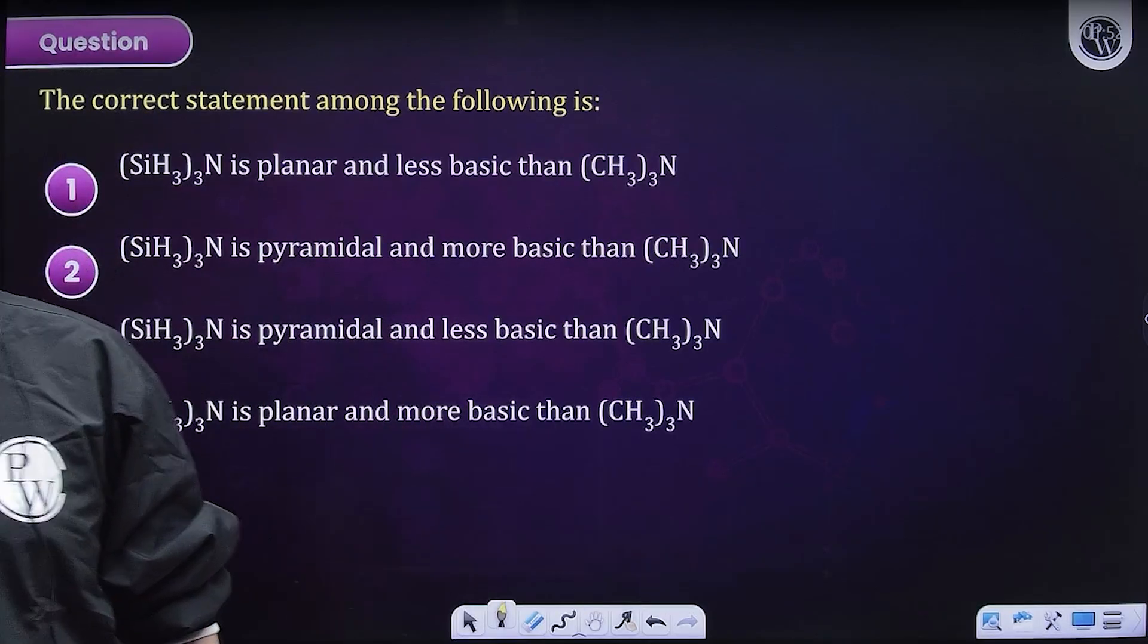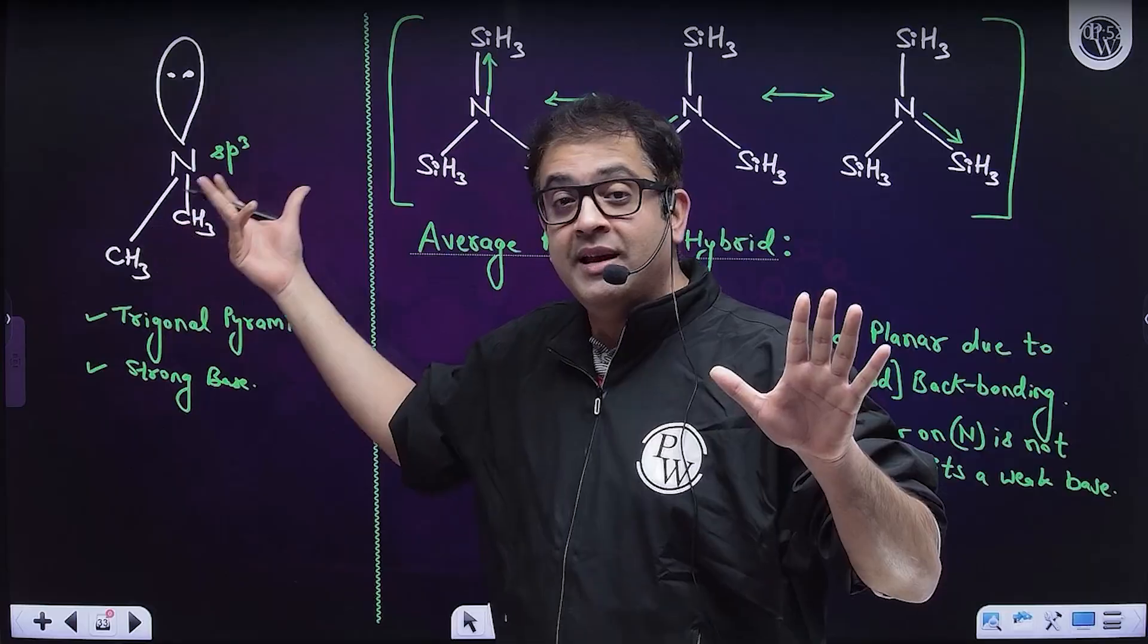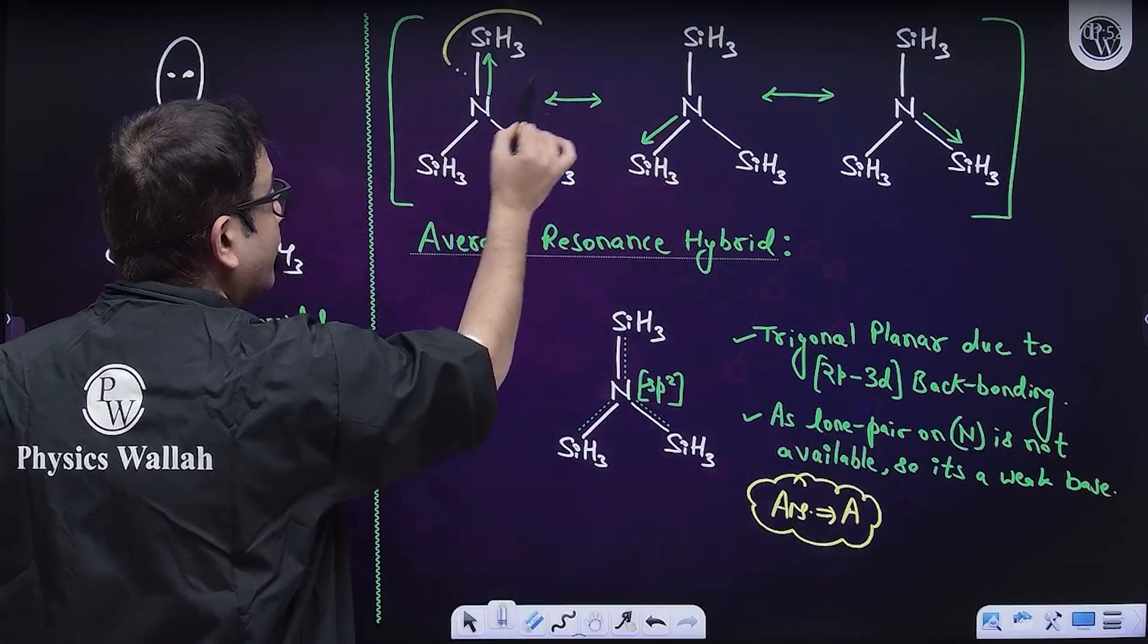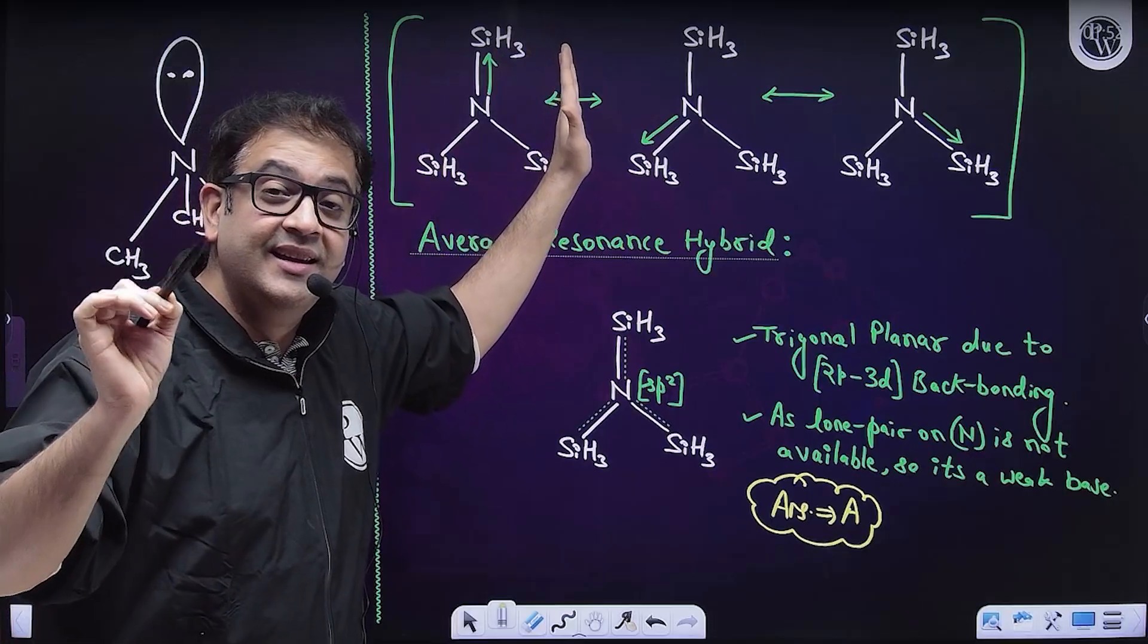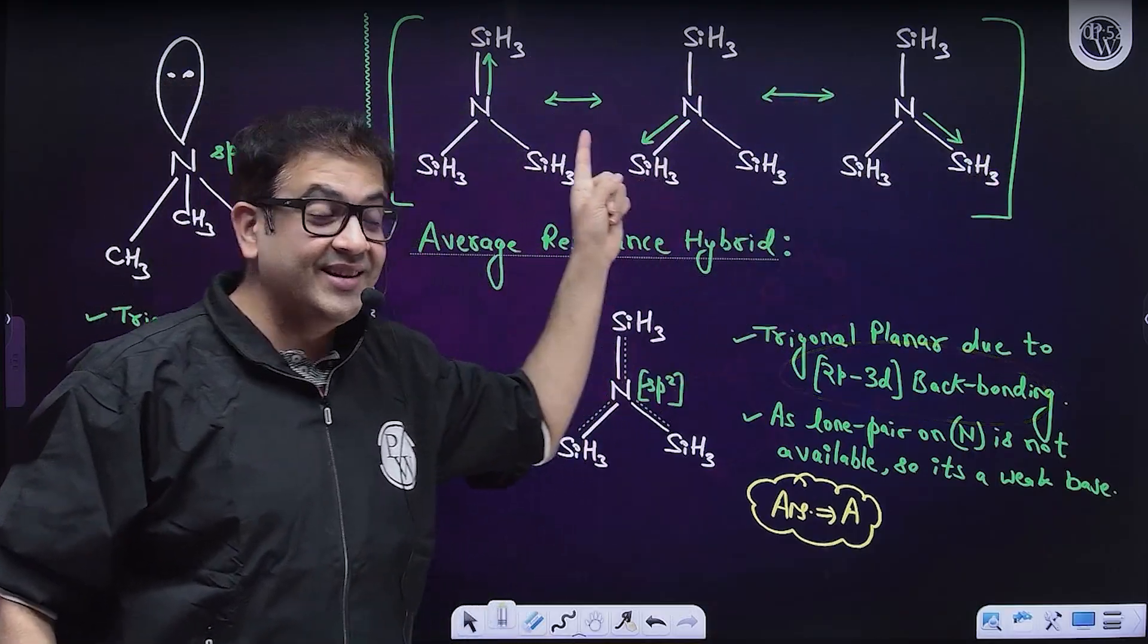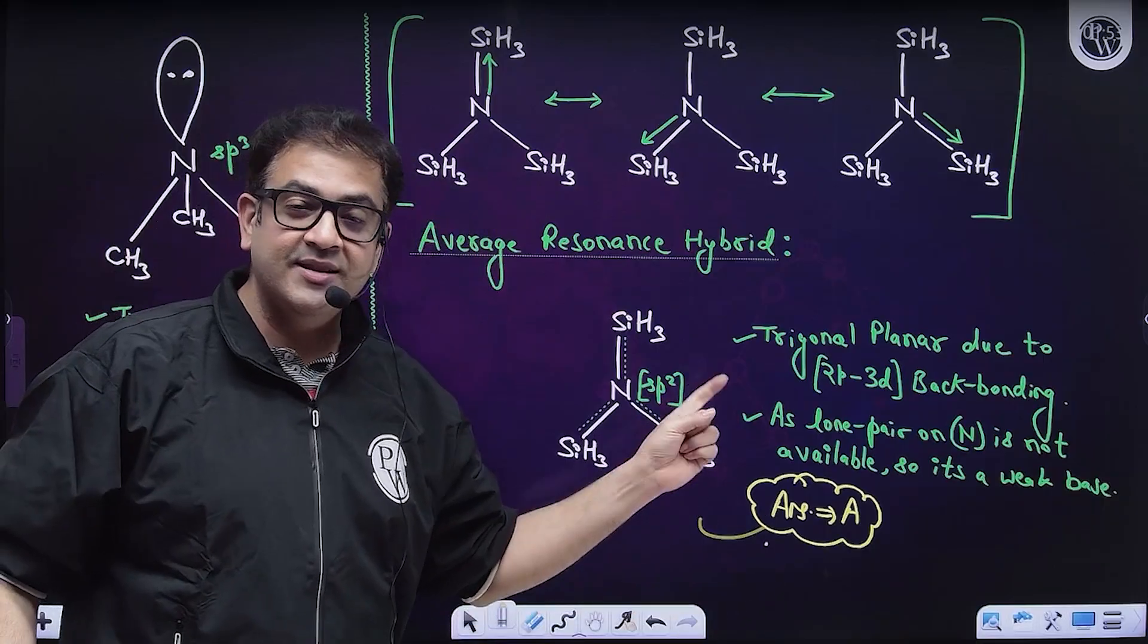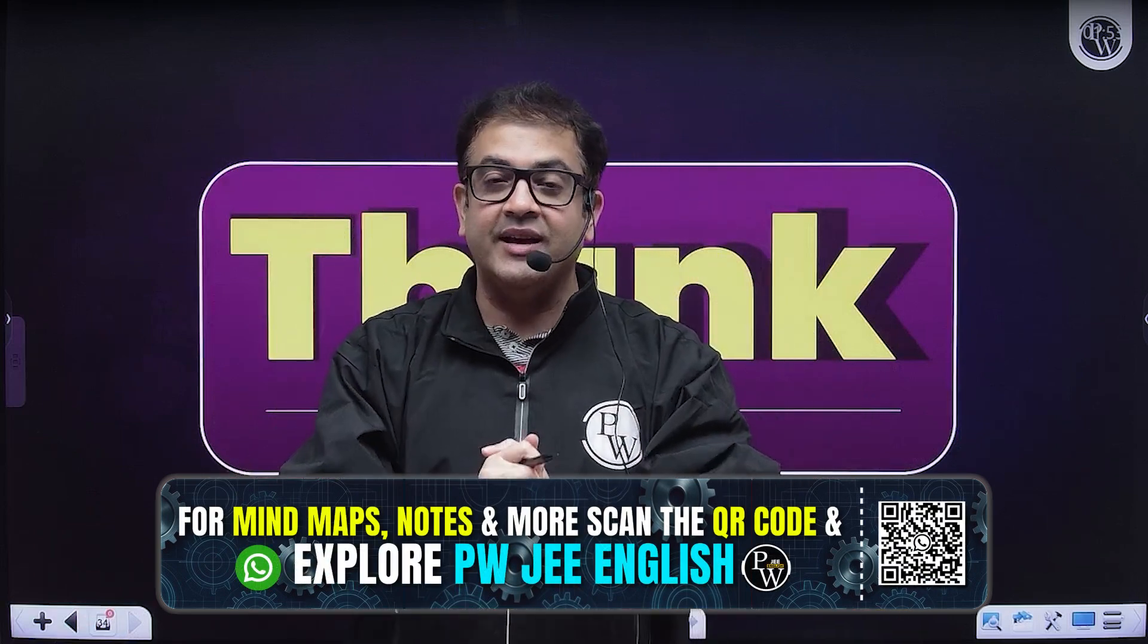Moving to the last question. Trimethylamine is a simple SP3 hybridized nitrogen atom which is a strong base because of lone pair on nitrogen atom. But if instead of carbon I have silicon over here, then this silicon has empty d orbital in which the lone pair of nitrogen can be easily coordinated. This is a clear case of backbonding. Due to this backbonding, these three resonating structures suggest the shape of nitrogen is trigonal planar because lone pair is not available in the central atom and therefore it is definitely a weaker base. This is me Gaurav Singh Arora signing off with all the best wishes.